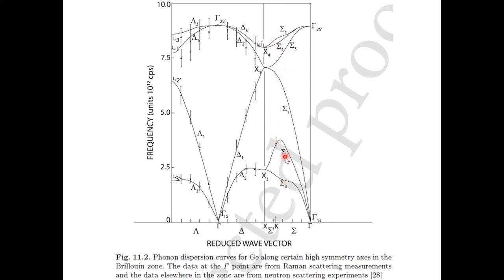For example, germanium has the diamond structure with two atoms per unit cell, giving six phonon branches. Along the Γ–K direction there are six solutions, though some are degenerate. At the Γ point a threefold degenerate acoustic branch and a threefold degenerate optical branch appear. Compatibility relations tell us how these symmetries split as you move away from Γ: for instance, a Γ₁₅ mode splits into Δ₅ + Δ₁.